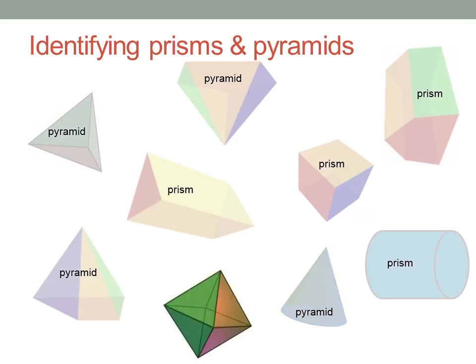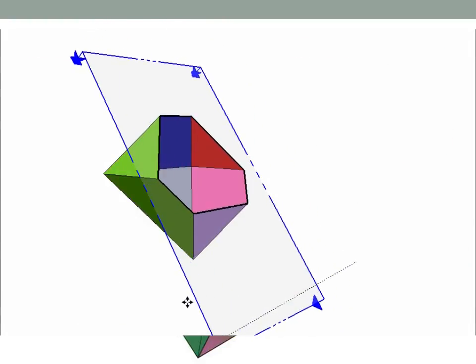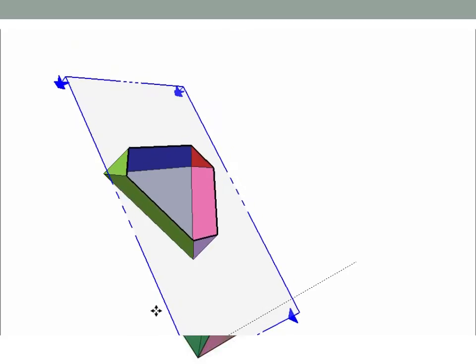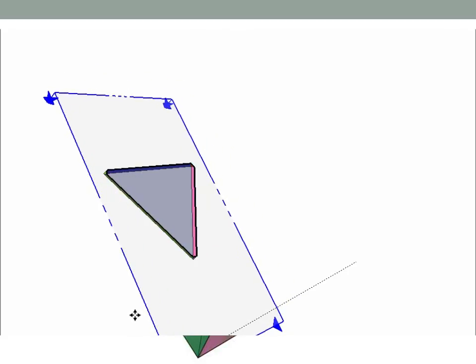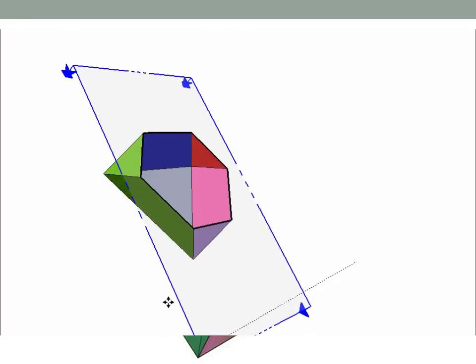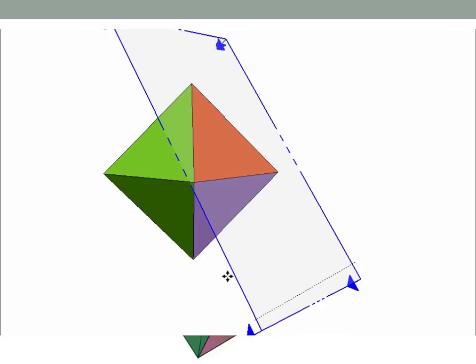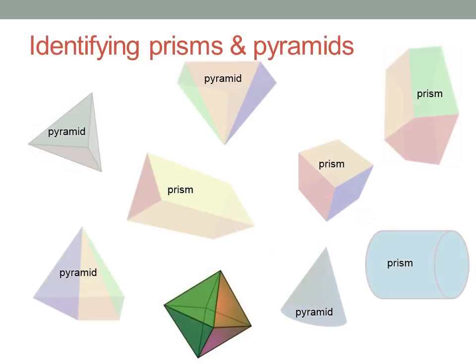Now, a tricky one. I said earlier that this shape, an octahedron, is neither a prism nor a pyramid. Look at what happens if I take a cross-section parallel to one of the faces, and look at slices all the way through the shape. The same thing will happen whichever face you choose. This is neither a prism nor a pyramid, and there are plenty of other shapes like this.